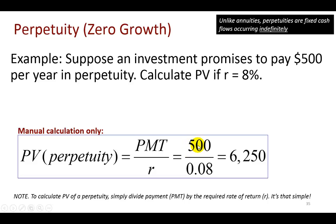So the first one here is present value of a perpetuity. First off, understand that a perpetuity, unlike annuities, are fixed cash flows occurring indefinitely. In other words, these are zero growth cash flows. They stay the same from year to year indefinitely.